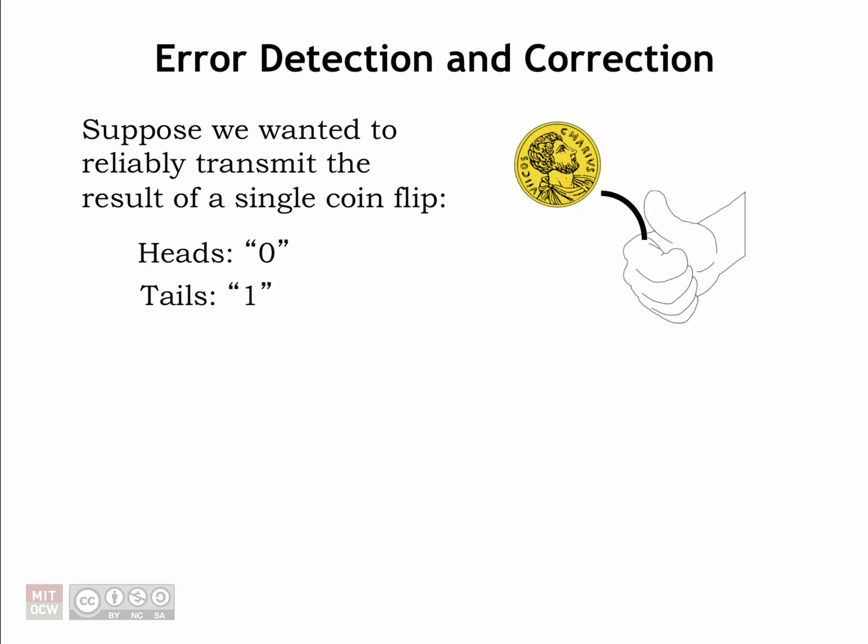Now let's think a bit about what happens if there's an error and one or more of the bits in our encoded data gets corrupted. We'll focus on single-bit errors, but much of what we discuss can be generalized to multi-bit errors.